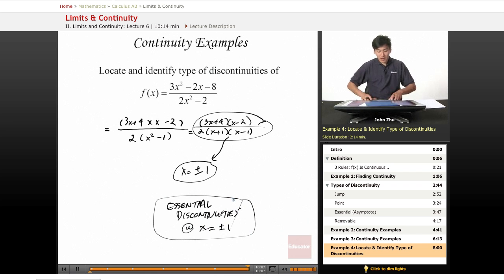So we can say that the types of discontinuities are asymptotic or essential discontinuities at x equals positive and negative 1. And that concludes the limits and continuity sections. Thank you for watching educator.com. See you in the next one.